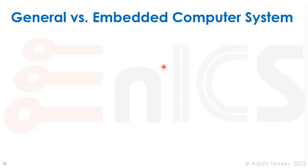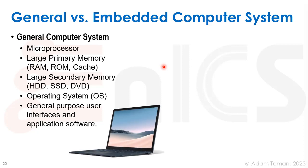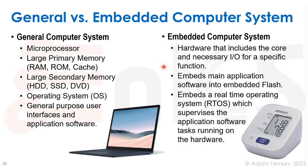To summarize the difference: a general computer system, such as a laptop, has a microprocessor or several microprocessors, a large primary memory based on DRAM with a cache hierarchy, and large secondary memory such as hard disk drives or solid-state drives. It almost always runs an operating system such as Linux, Windows, or iOS, and is very general-purpose, providing user interfaces and supporting different application software.